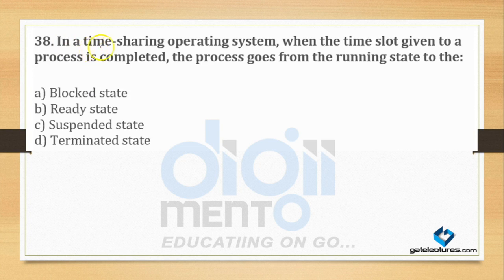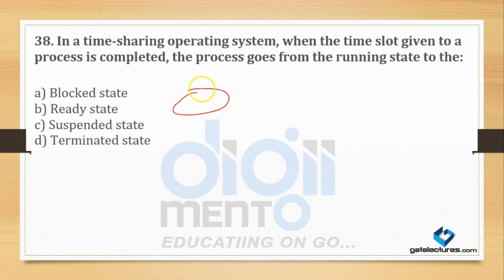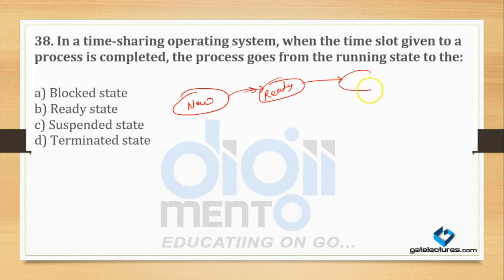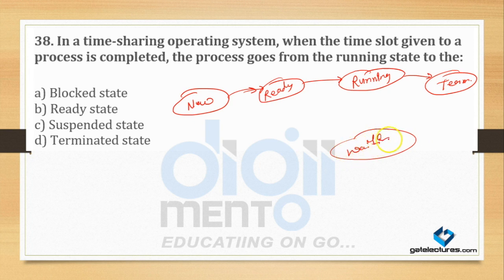Question number 38: In a time sharing operating system, when the time slot given to a process is completed, the process goes from the running state to where? We have seen the process state diagram. If the process time quantum is finished, the options are: termination, waiting, or ready. If time slot has expired, where will it go? Running can go to terminate or to waiting, and last state is waiting.